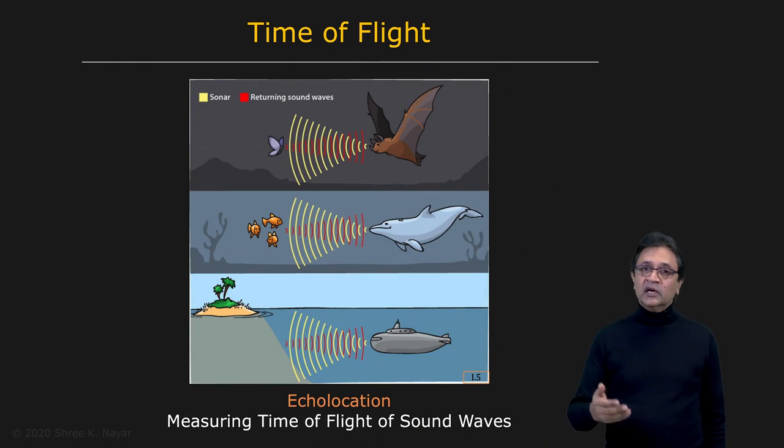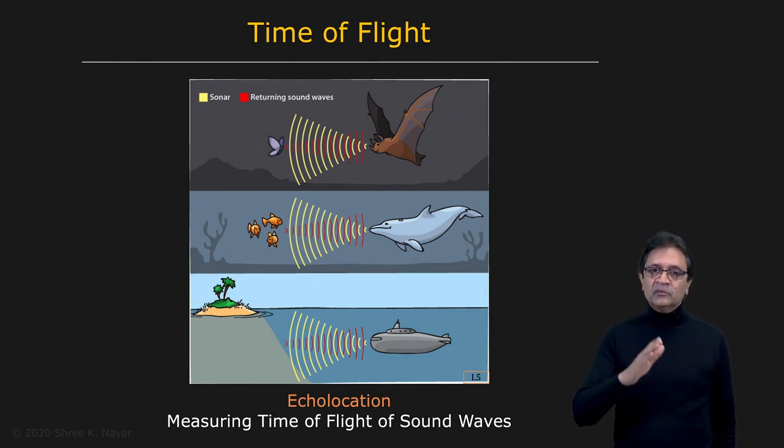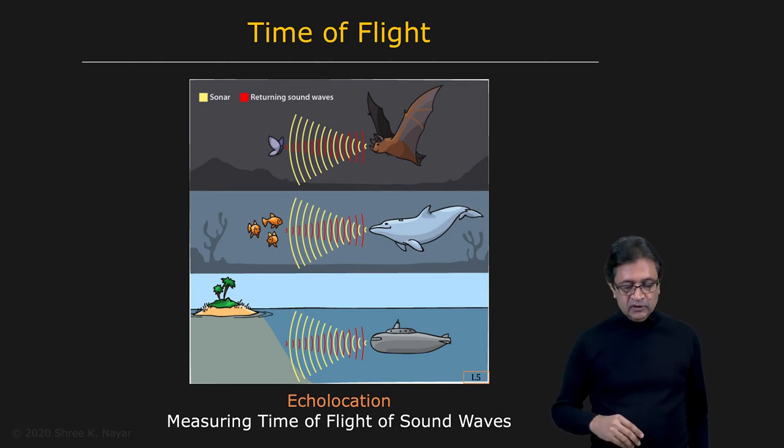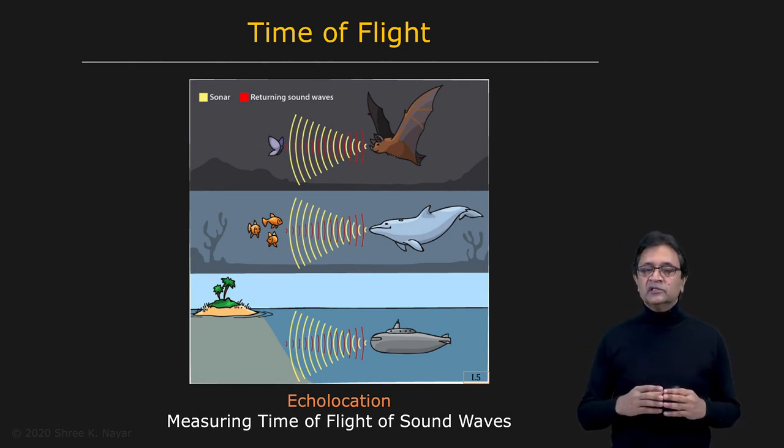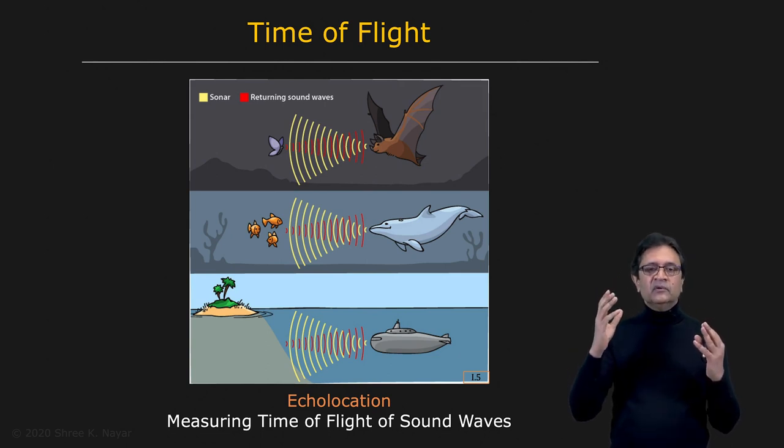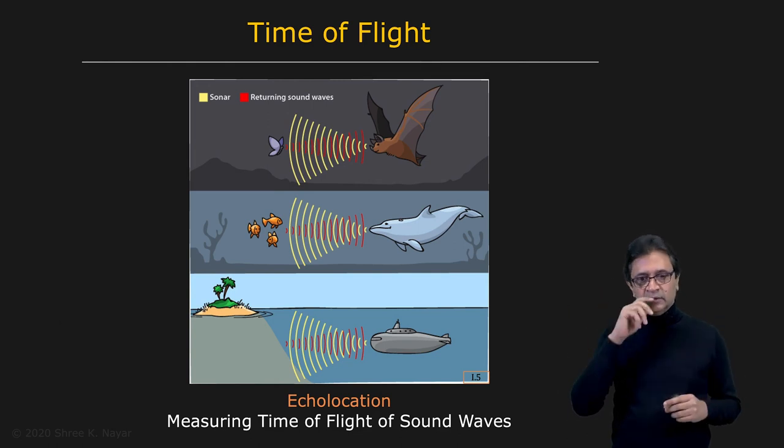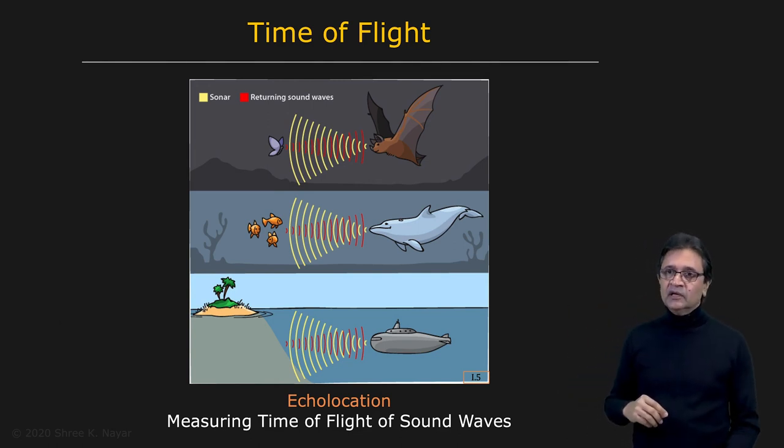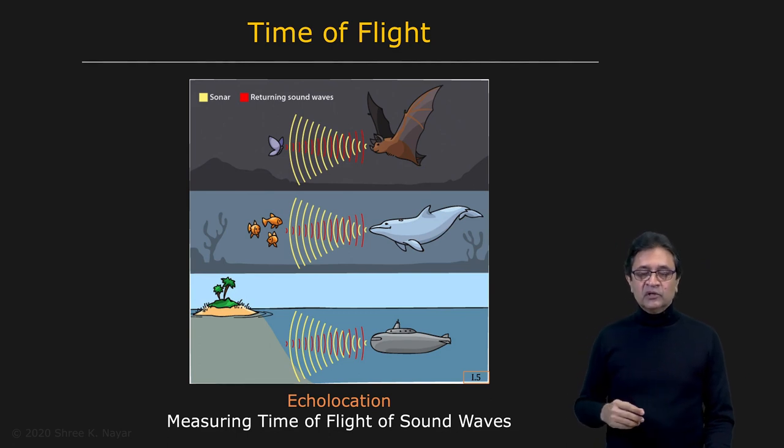Time of flight is an old idea and extensively used in nature, particularly when one talks about the time of flight of sound. There are animals such as bats, hedgehogs, and whales that would simply throw calls out and then listen for the echoes of these calls to understand where things are in three-dimensional space. This is called echolocation, and it's also called biosonar. That is their primary way of figuring out the three-dimensional structure of scenes.